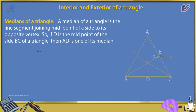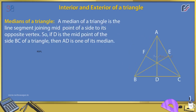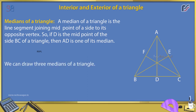Medians of a triangle. A median of a triangle is the line segment joining the midpoint of a side to its opposite vertex. If D is the midpoint of side BC of a triangle, then AD is one of its medians. We can draw three medians of a triangle.